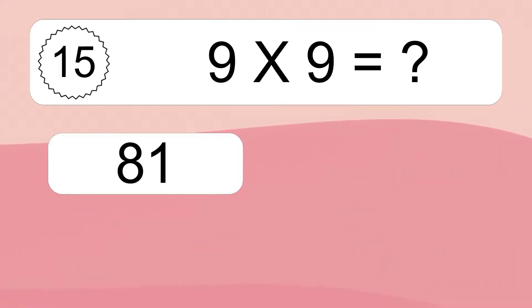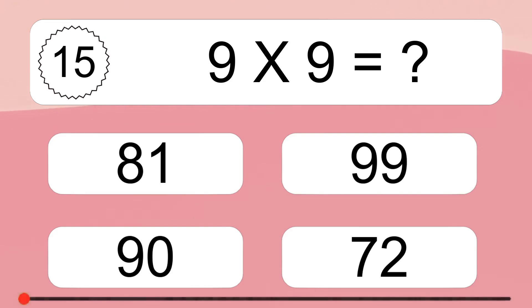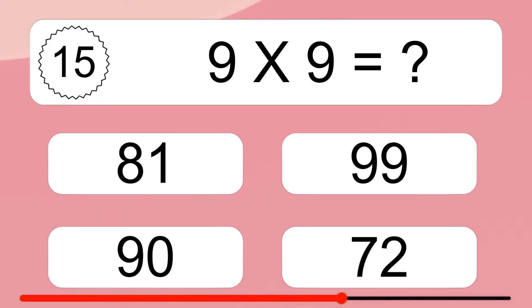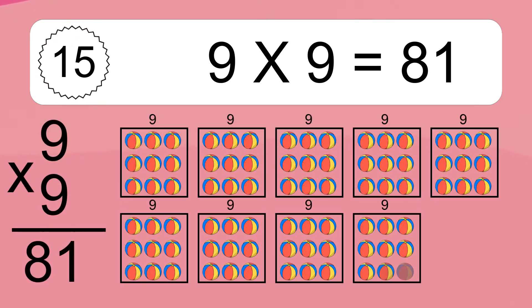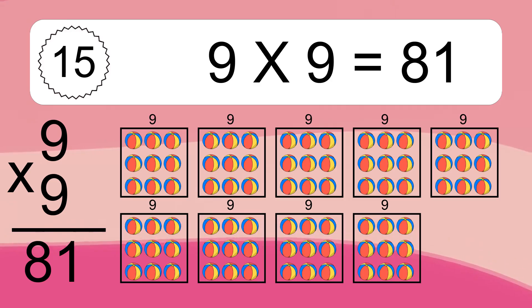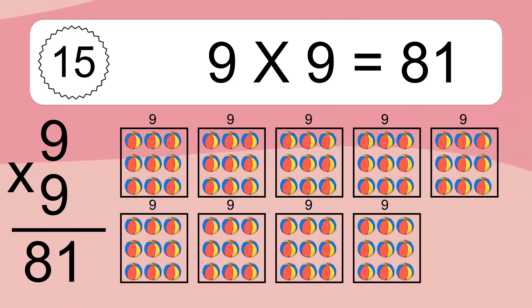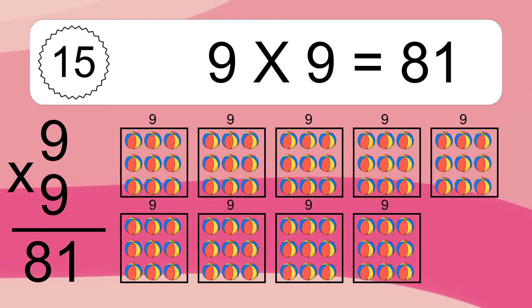Nine times nine equals what? Nine times nine equals 81. We have nine boxes, and each box has nine colorful balls inside. If you count all the balls in all the boxes together, you will have nine times nine balls. This equals 81 balls.